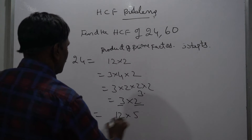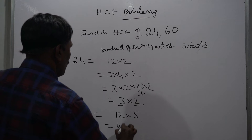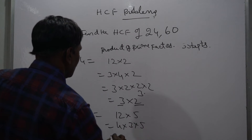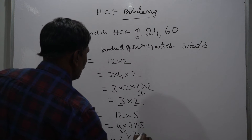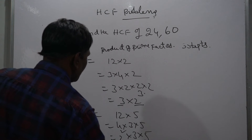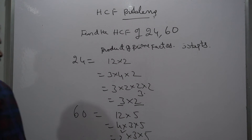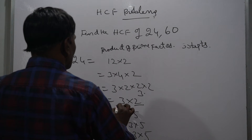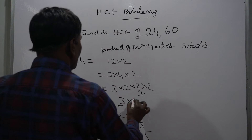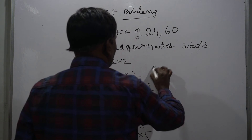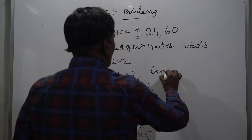For 60: 12 into 5, so 4 into 3 into 5, which gives us 2 squared into 3 into 5. Here 2, 3, and 5 are all prime numbers. So 24 = 3 into 2 cubed and 60 = 2 squared into 3 into 5.